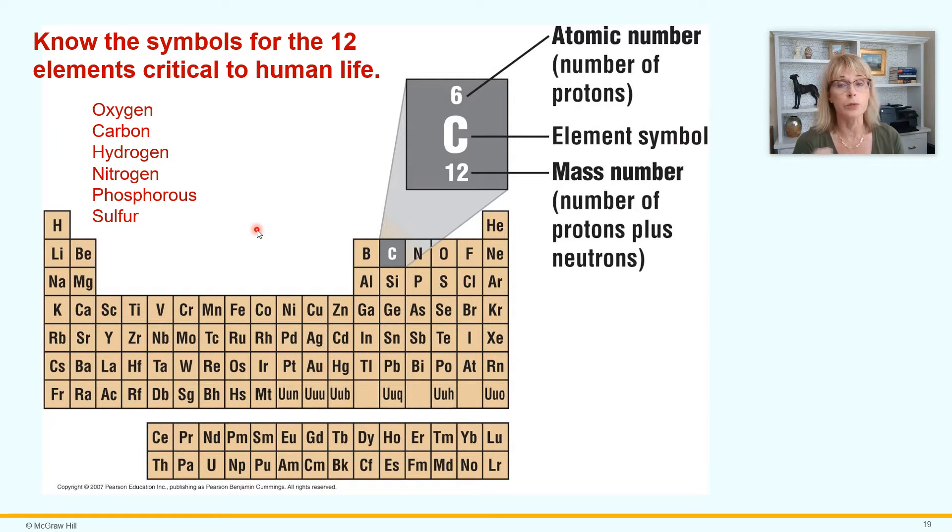Here you can see carbon has got an atomic number of six, so it has six protons, a mass number of 12. So most of the atoms of carbon have got six neutrons as well. From a biology point of view, we only care about some of these elements. But I do want you to know the 12 chemical symbols for the elements that are critical to human life. I told you in the introductory part of the class that it is a good strategy while you're watching these lecture videos to have already printed up the study guide so you can be answering study guide questions as you're listening to lecture. Here's a place where this is actually written in the study guide so you can fill it in.